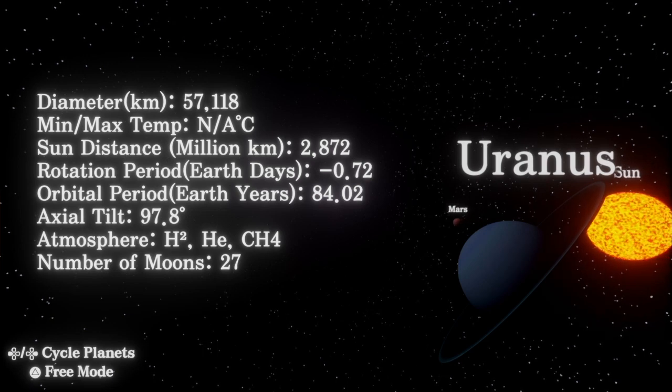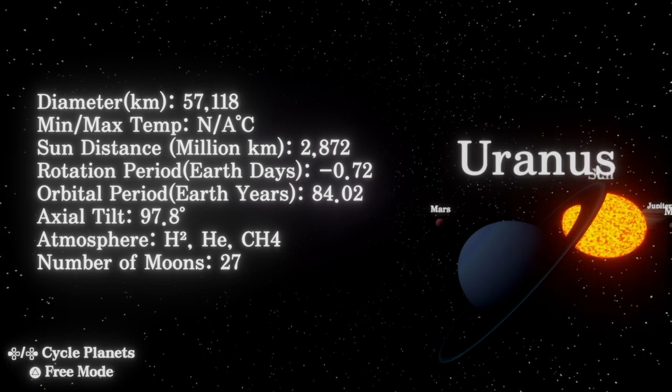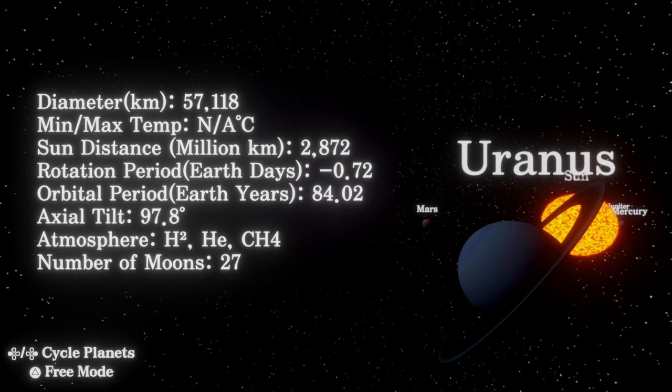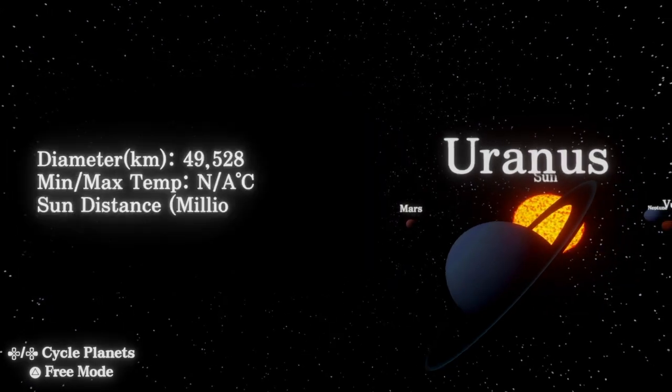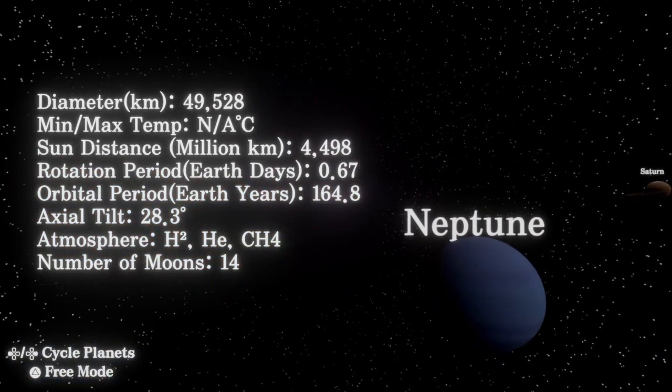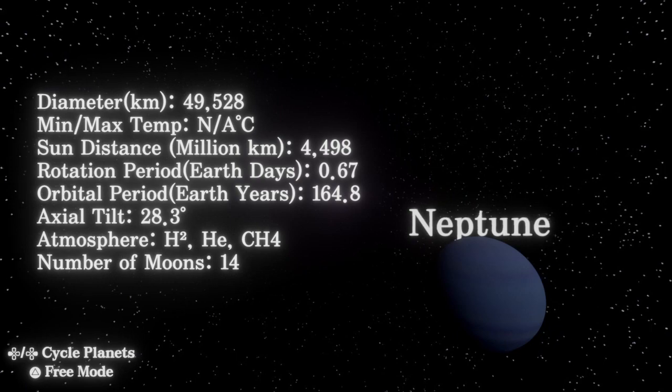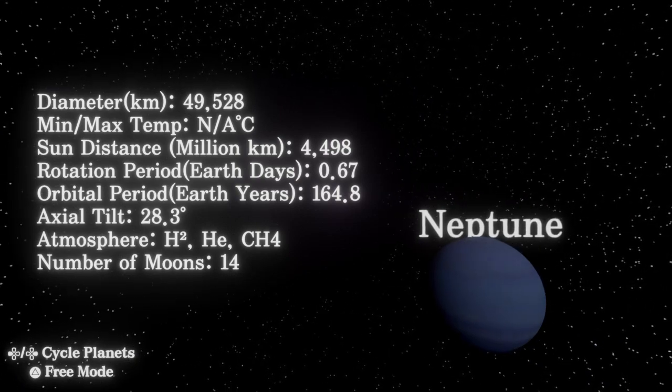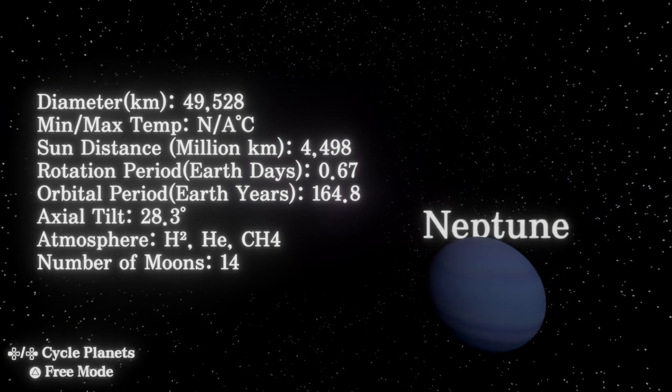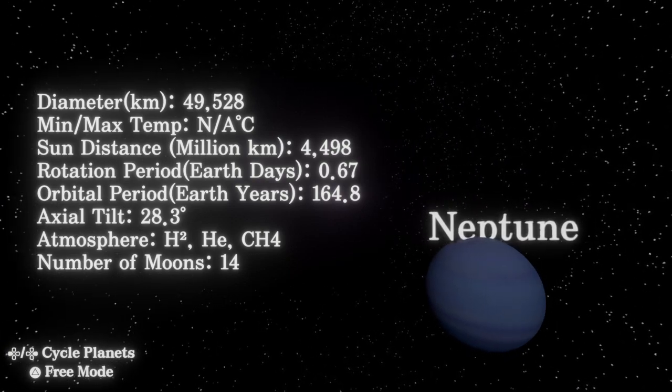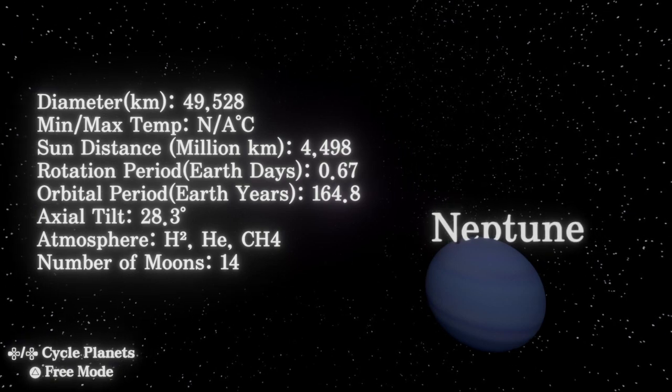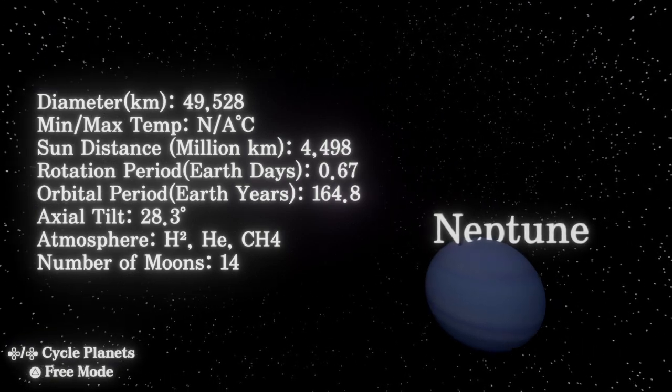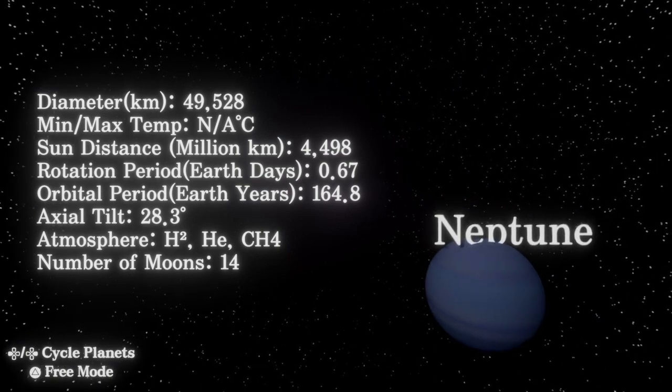Neptune: although its atmosphere, like the gas giants, is made of hydrogen and helium, its interior is very similar to Uranus, made of ices such as water, ammonia, and methane. They are called ice giants to note this difference.